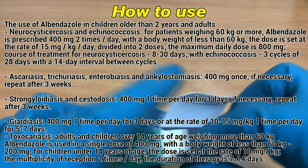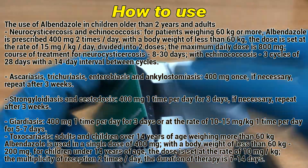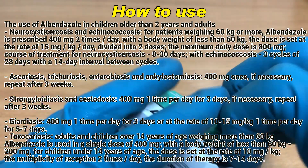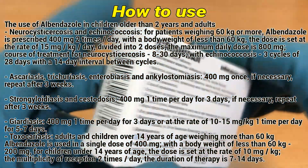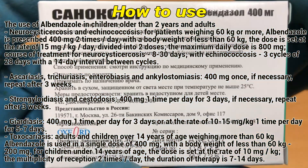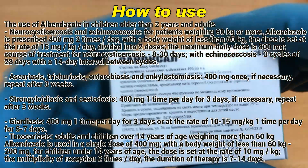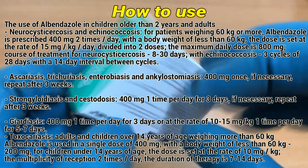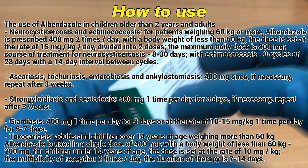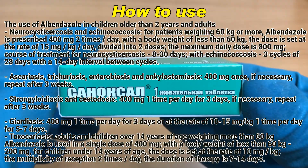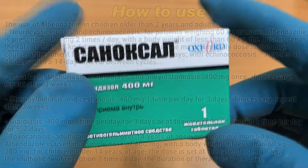Toxocariasis: Adults and children over 14 years of age weighing more than 60 kg — Albendazole is used in a single dose of 400 mg. With a body weight of less than 60 kg — 200 mg. For children under 14 years of age, the dose is set at the rate of 10 mg per kg. The medication is taken 2 times per day; the duration of therapy is 7-14 days.